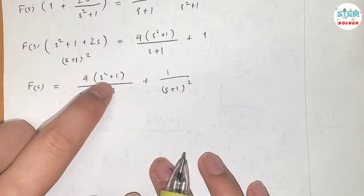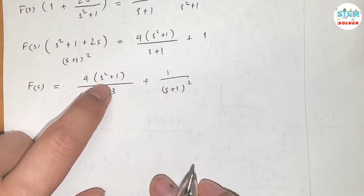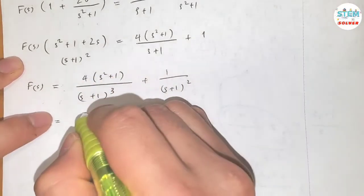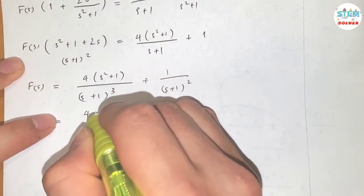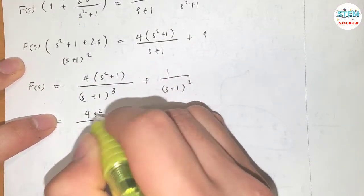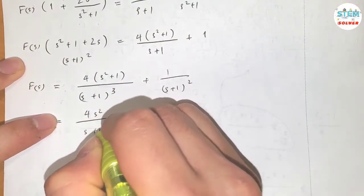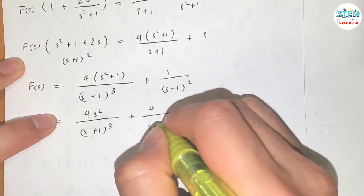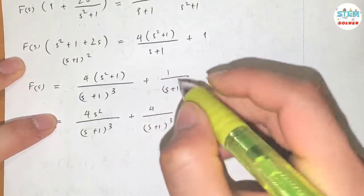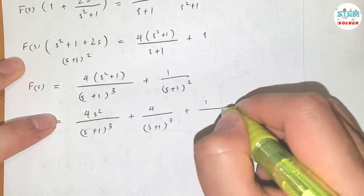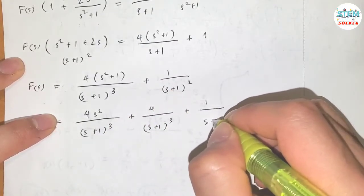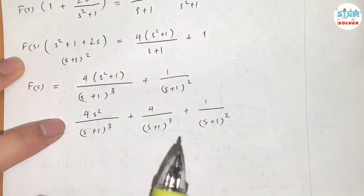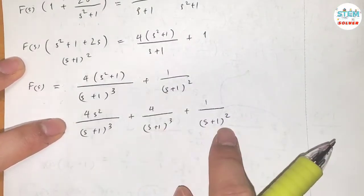Now I'm going to distribute the 4 and split this into two fractions: 4s² over (s plus 1) cubed, plus 4 over (s plus 1) cubed, plus 1 over (s plus 1) squared.